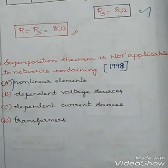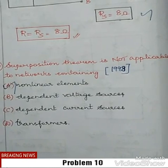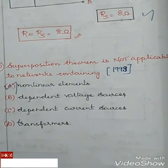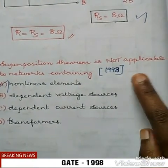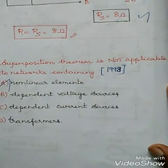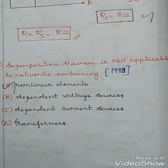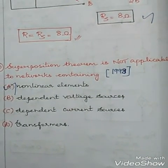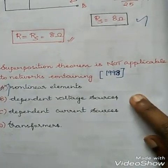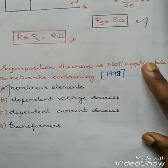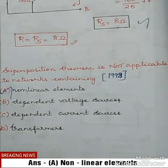Problem number 10. This problem was asked in the 1998 GATE paper: superposition theorem is not applicable to networks containing — four options are given. Always keep in mind that the superposition theorem is applicable only to linear networks. So the answer is: it is not applicable to non-linear elements.